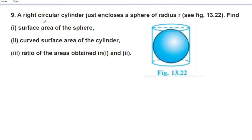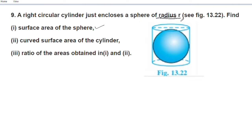A right circular cylinder just encloses a sphere of radius r. Find the surface area of the sphere. If you have a circular cylinder, you can enclose a sphere. The equation is 4πr. What is the surface area of the sphere of radius r? We are going to answer this question.